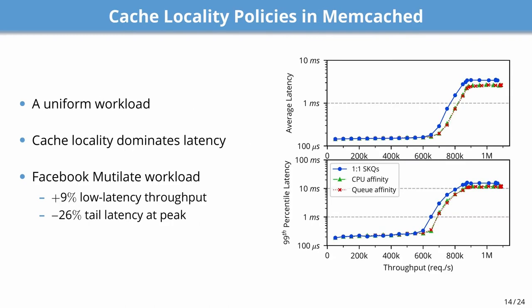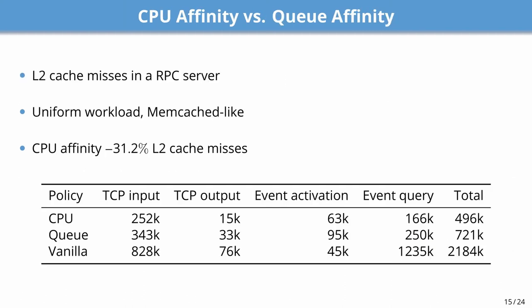We benchmarked both cache locality policies in memcached with the Facebook mutilate workload. Memcached presents a uniform workload where latency is mostly dominated by cache locality. With the one-to-one model, memcached reached maximum low-latency throughput at 600K requests per second. Both policies extended the low-latency throughput by 9% and reduced the tail latency at peak throughput by 26%. To compare the CPU affinity policy with the queue affinity policy, we measured L2 cache misses of both policies in our RPC server. Both policies lower L2 cache misses across the entire networking stack. The CPU affinity policy has 31.2% fewer L2 cache misses compared to queue affinity, as it follows connection migration.